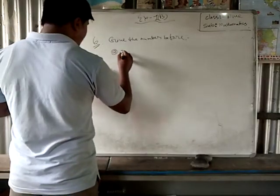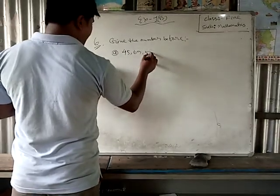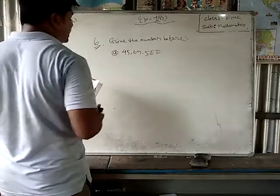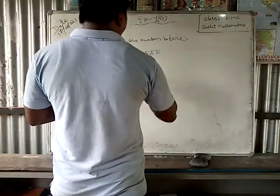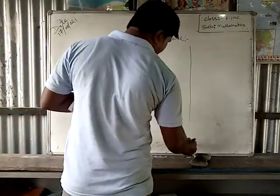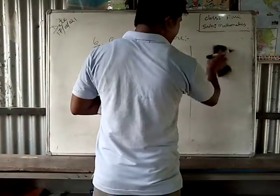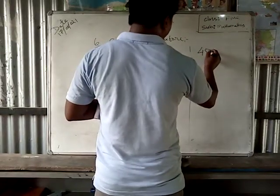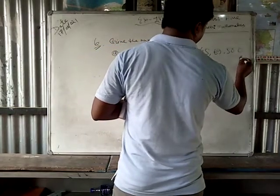Number 8 — 45,69,500. So before number — before what number was there? If you want to get the before number easily, you have to subtract 1. Before number, if you want to find out this number, you have to subtract 1. So 45,69,500 — I would like to subtract only 1.